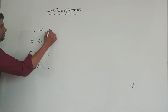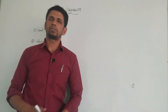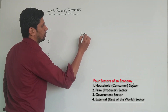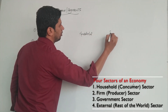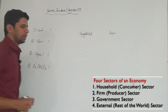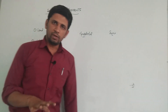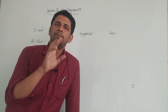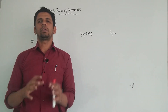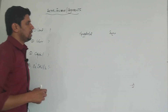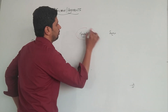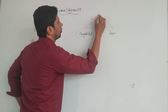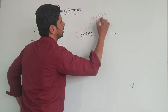In the previous lecture, we discussed the four sectors of the economy. The first sector is the household sector and the second sector is the firm sector. The basic function of the household or consumer sector is that these households provide factors of production to the firm sectors.